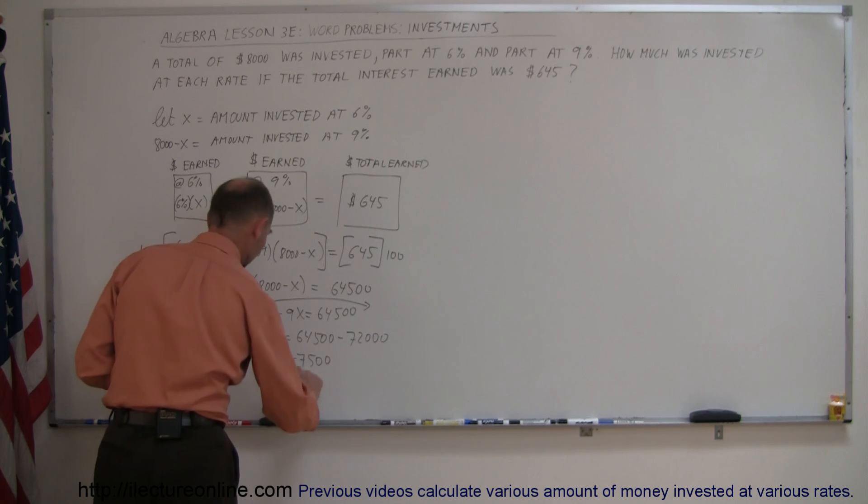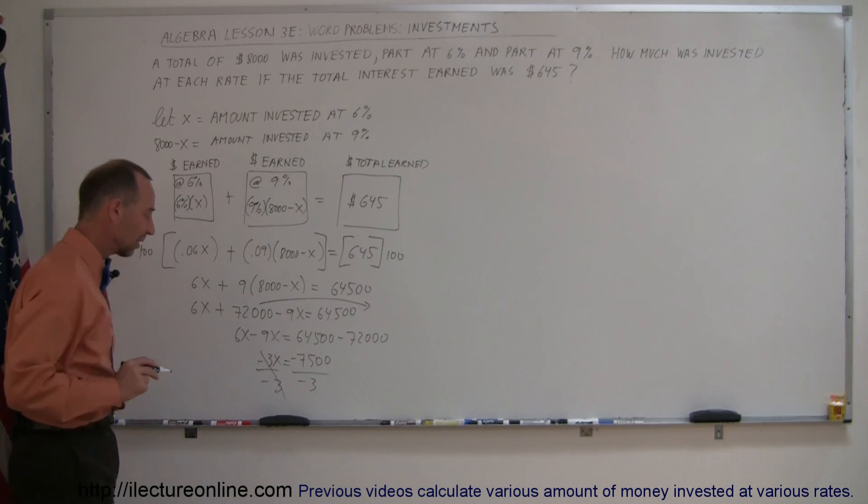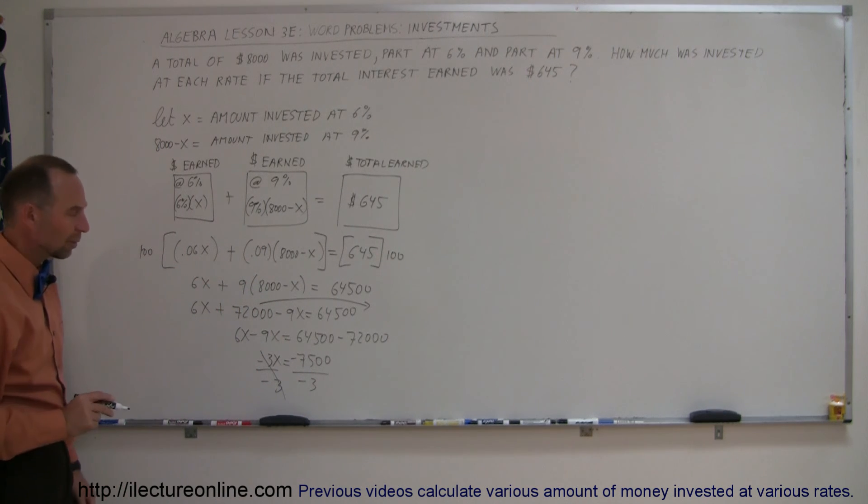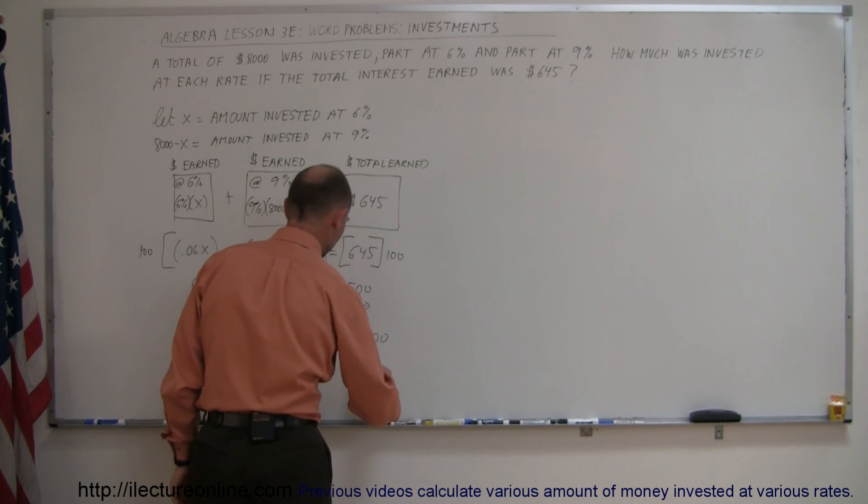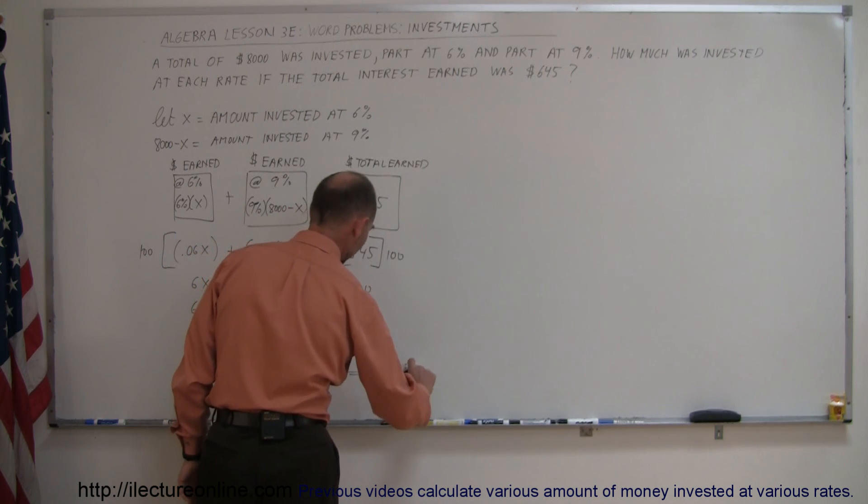Now we divide both sides of the equation by the numerical coefficient in front of the X. The minus 3s cancel out. Notice the negatives here will cancel out, and 3 goes into 7,500, 2,500 times. So X equals 2,500.